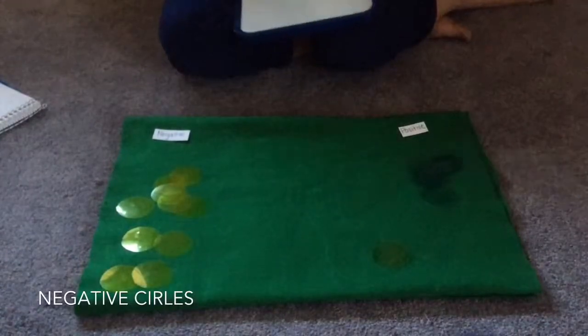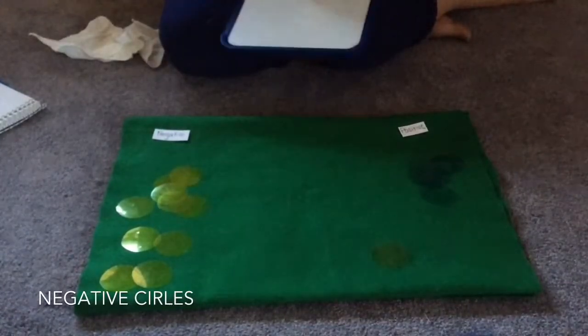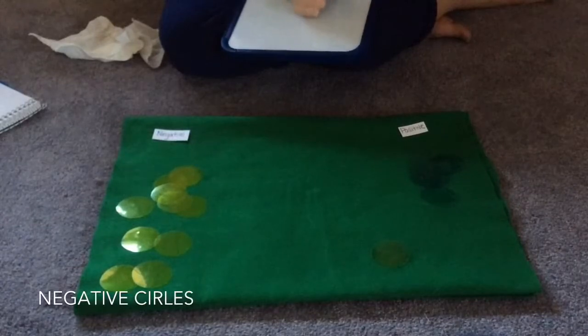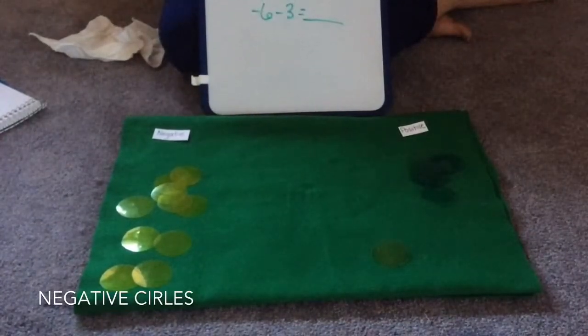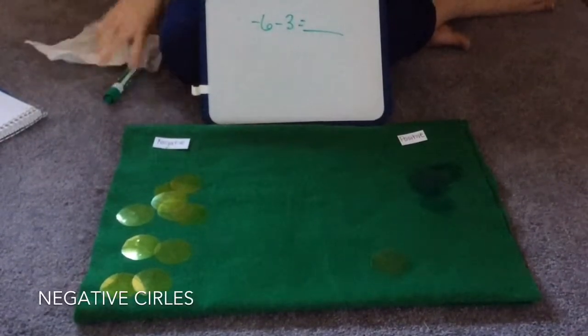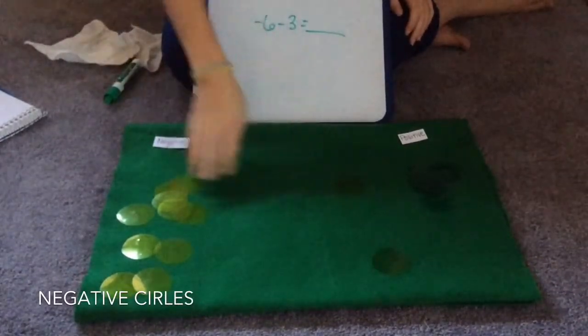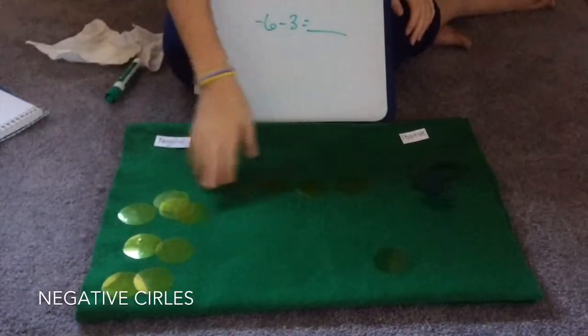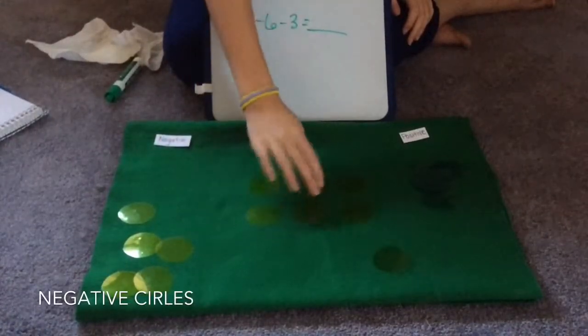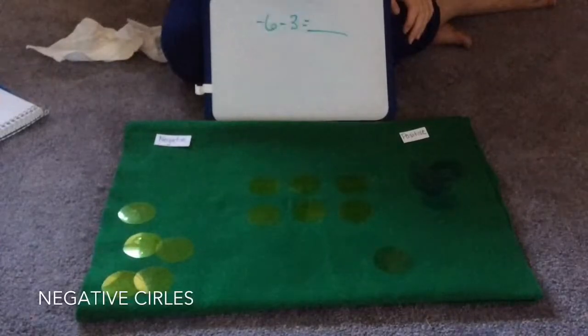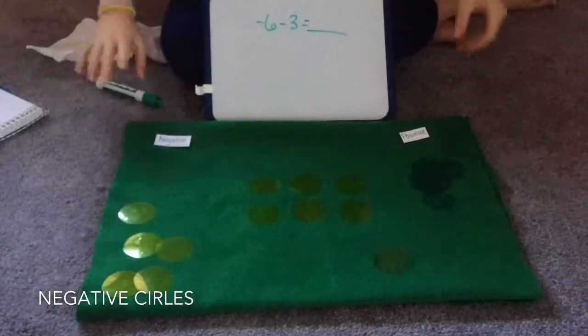We have one last one and it's negative six minus three. This is a tricky one where I really always got confused. So we're just going to start with six negatives. That's what we got. And then it says subtract positive three. Where are we going to get this positive three?